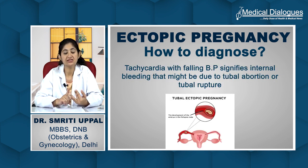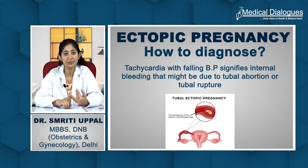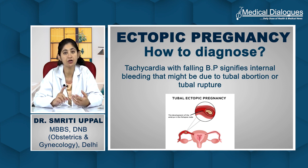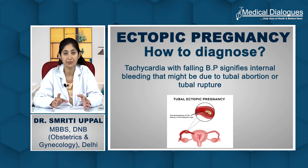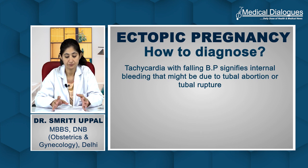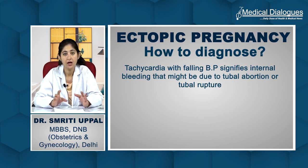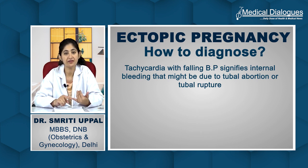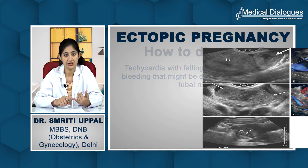A significantly low blood pressure is indicative of some kind of internal bleeding, which might be happening due to a tubal abortion or a tubal rupture, possibly with syncope. Having taken the proper history, we then send the patient for an ultrasound to localize the pregnancy.